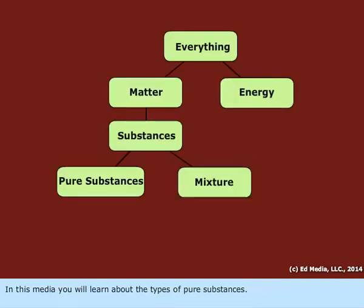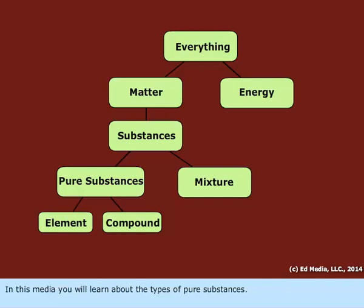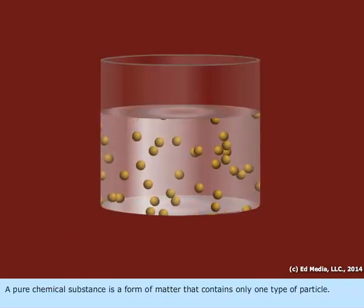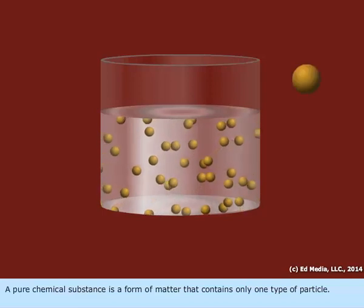In this media, you will learn about the types of pure substances. A pure chemical substance is a form of matter that contains only one type of particle.